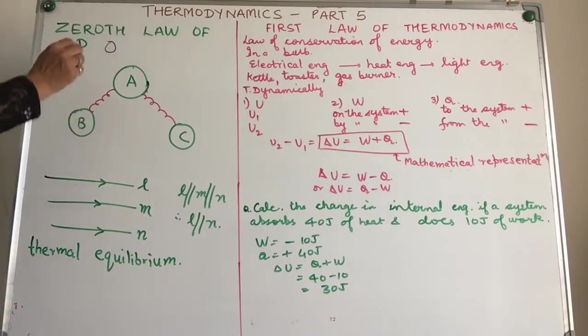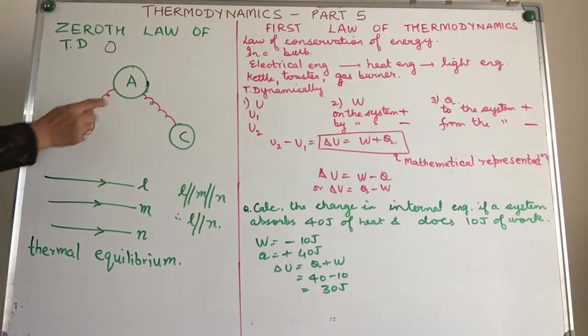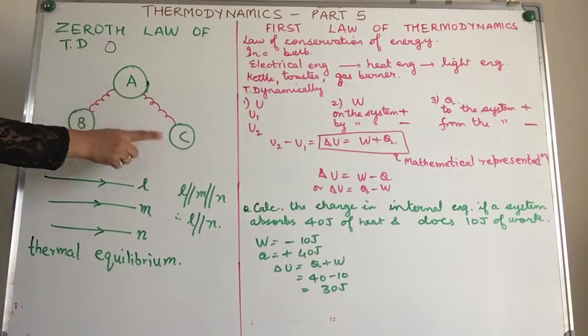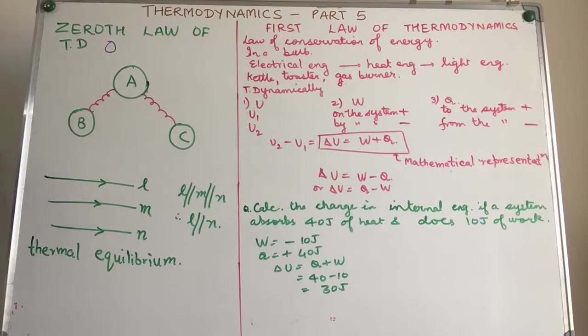So zeroth law of thermodynamics, you have three systems A, B, C. A is in thermal equilibrium with B, thermal equilibrium. Now let us understand that first.